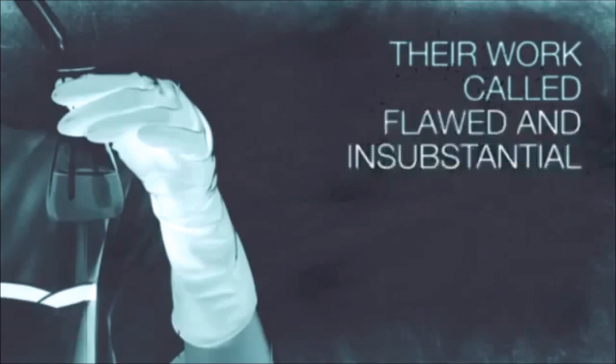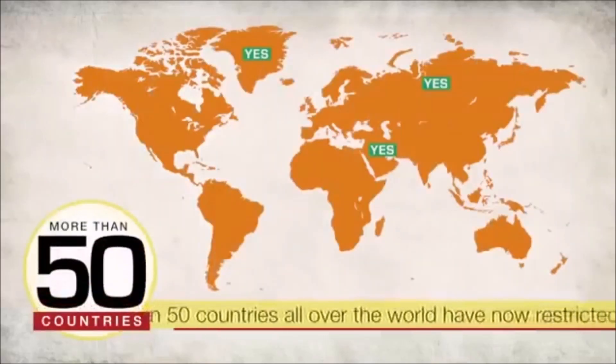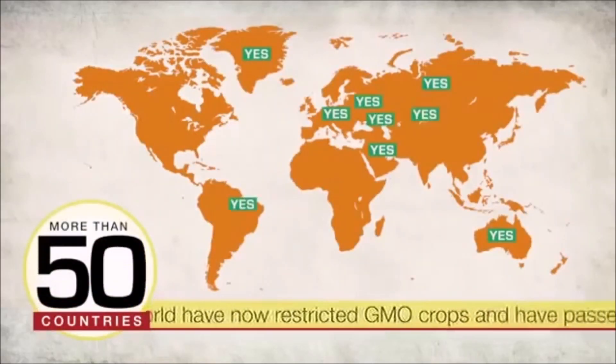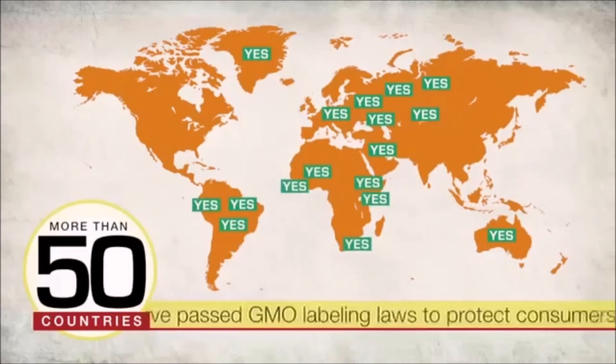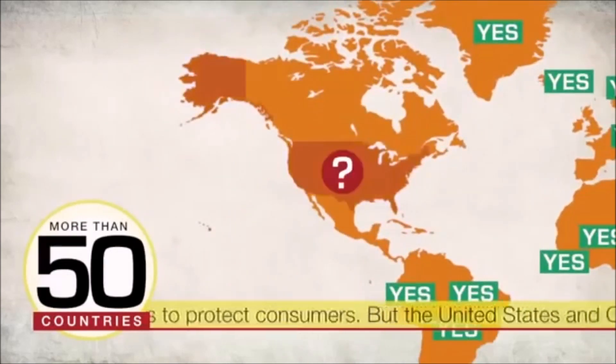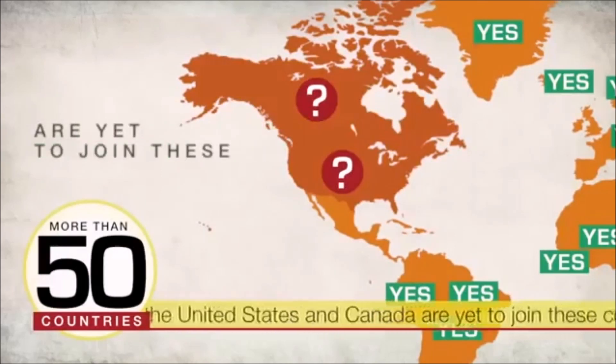More than 50 countries all over the world have now restricted GMO crops and have passed GMO labeling laws to protect consumers. But the United States and Canada are yet to join these countries.